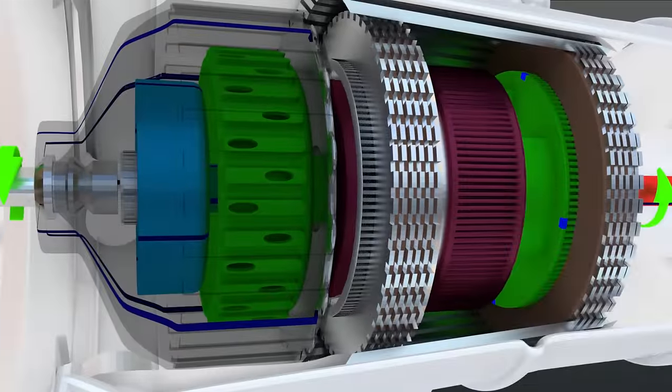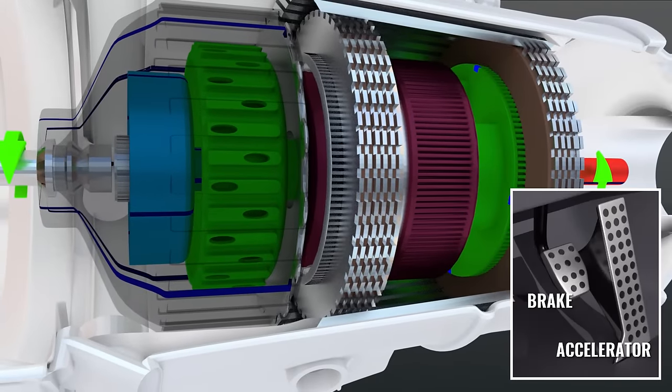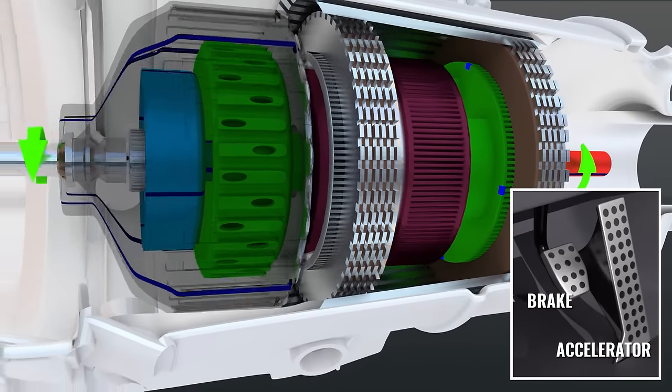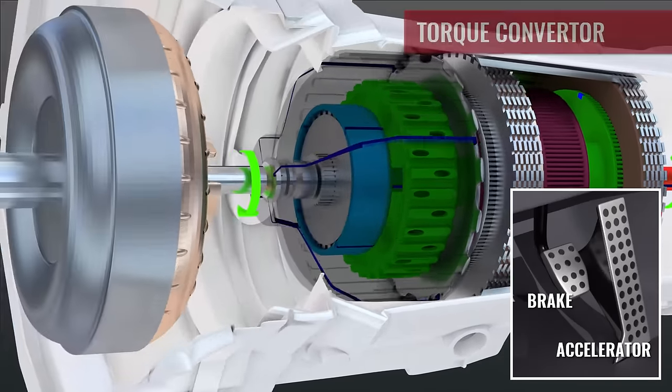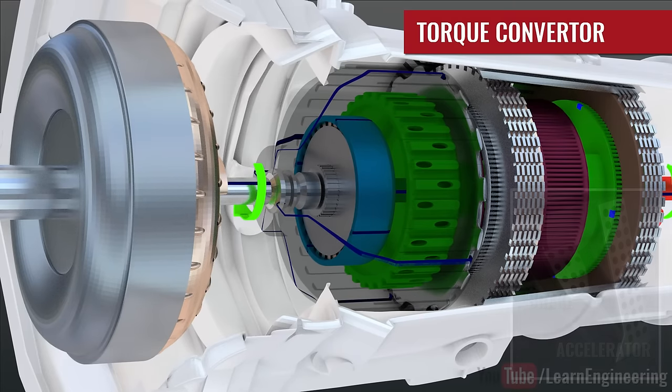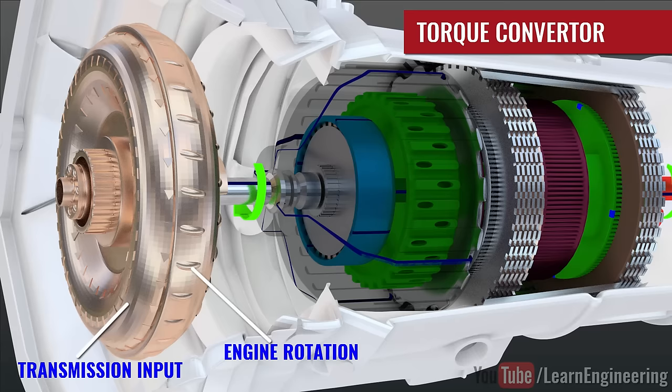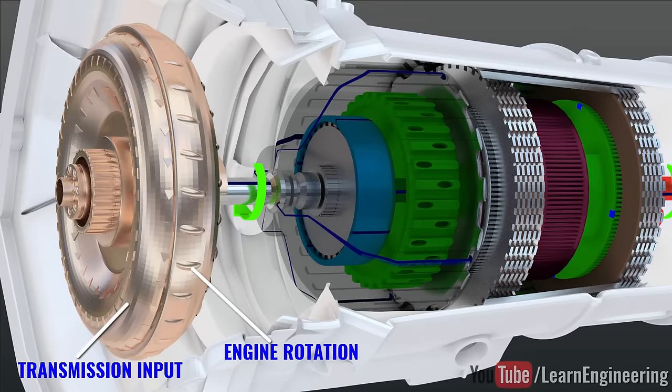However, there is no clutch pedal in an automatic transmission car. So, to separate the engine rotation from the transmission, a torque converter is used. This is a fluid coupling, which allows slippage, so a torque converter helps automatic transmission handle the braking scenario without the need of a clutch pedal.